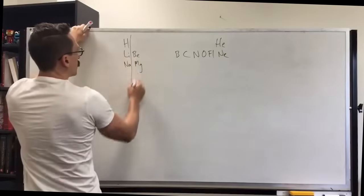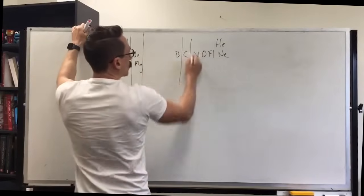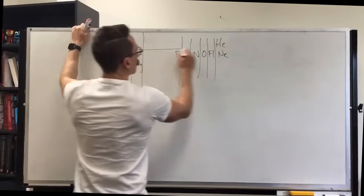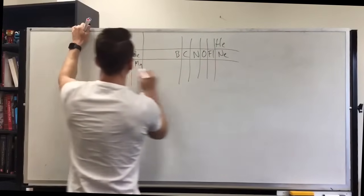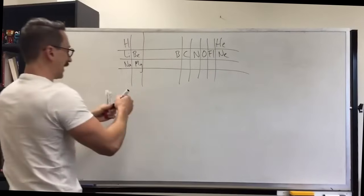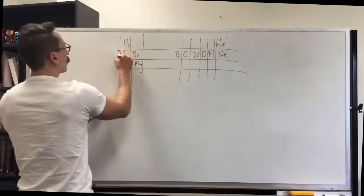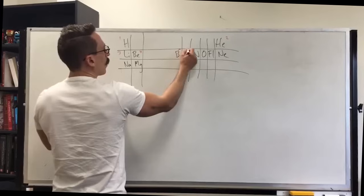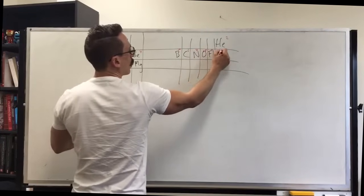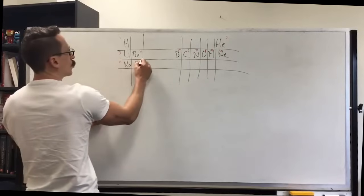Now if we separate them out into their relevant rows and columns of the periodic table, what you're going to find is this. If we were to count the numbers 1, 2, 3, 4, 5, 6, 7, 8, 9, 10, 11, and 12.